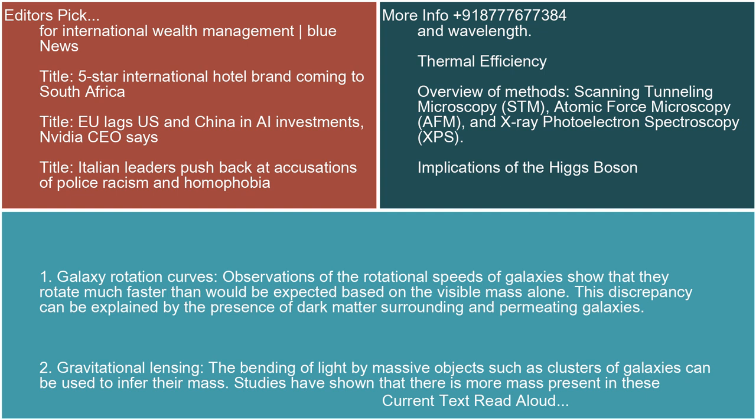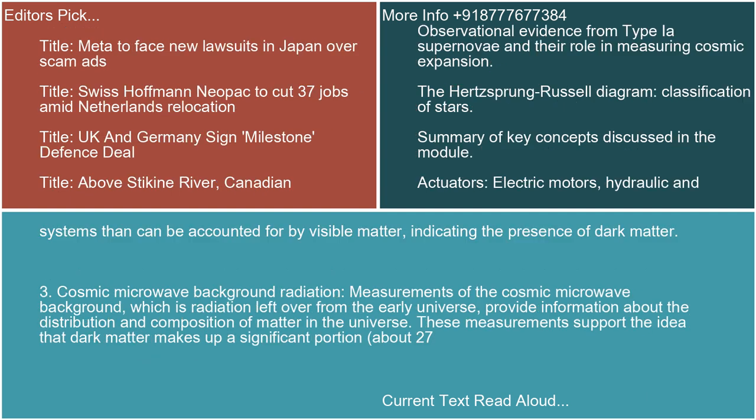2. Gravitational Lensing: The bending of light by massive objects such as clusters of galaxies can be used to infer their mass. Studies have shown that there is more mass present in these systems than can be accounted for by visible matter, indicating the presence of dark matter.